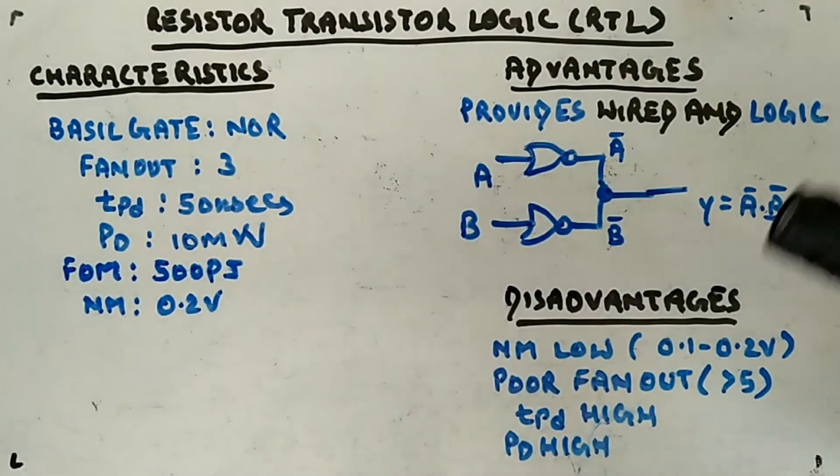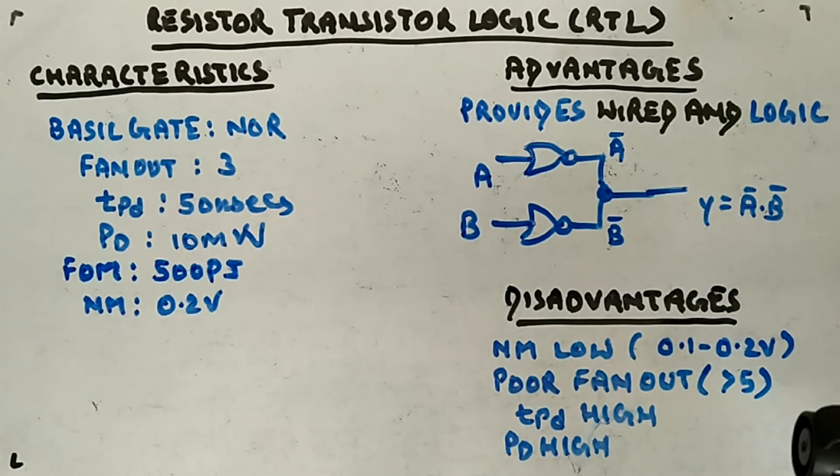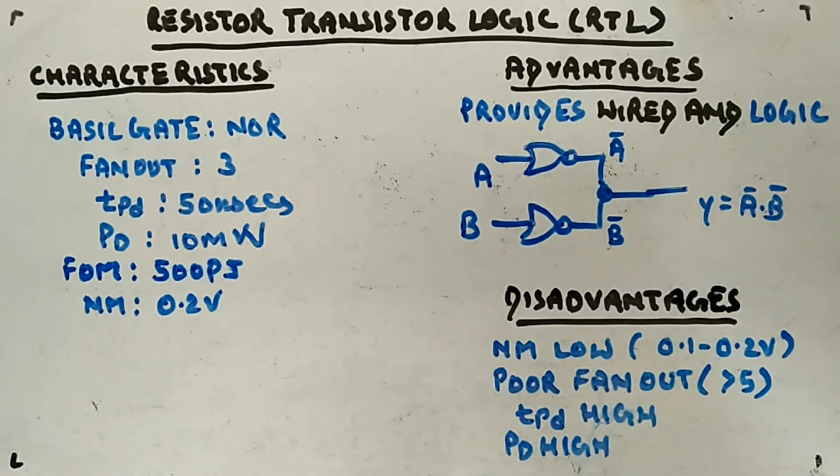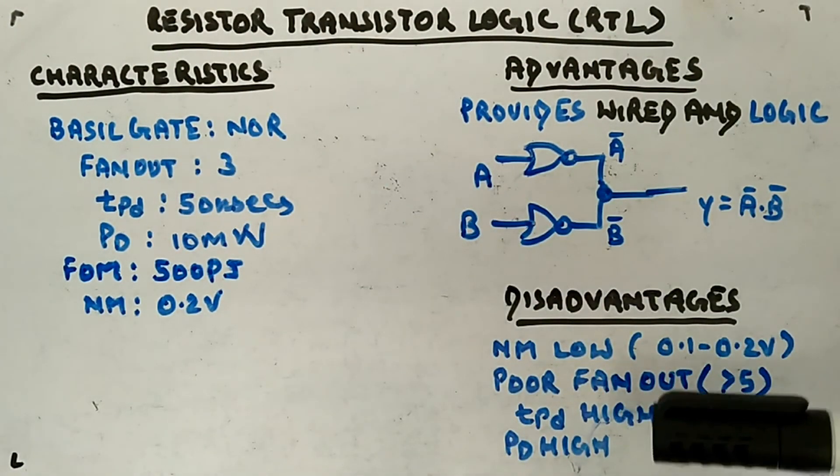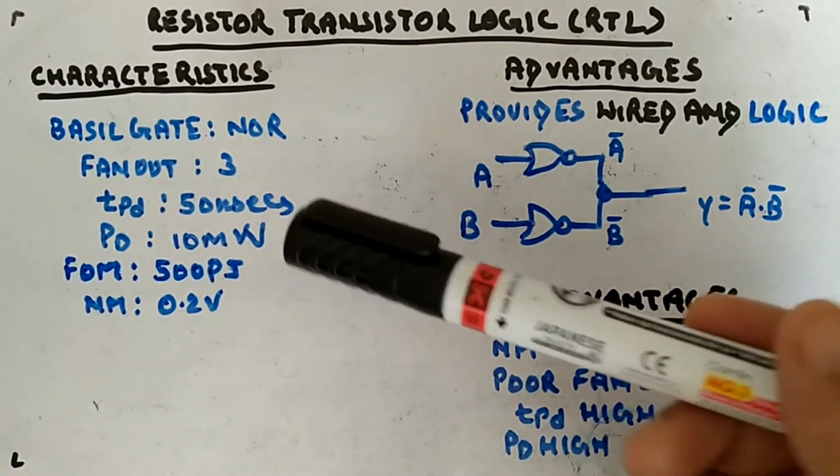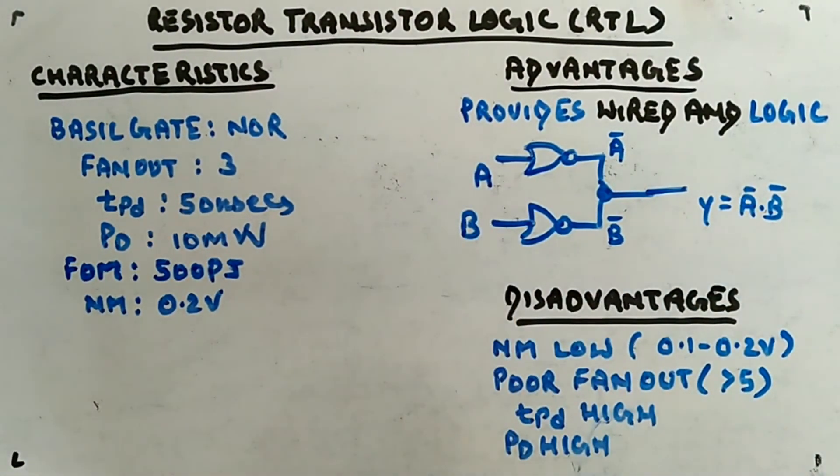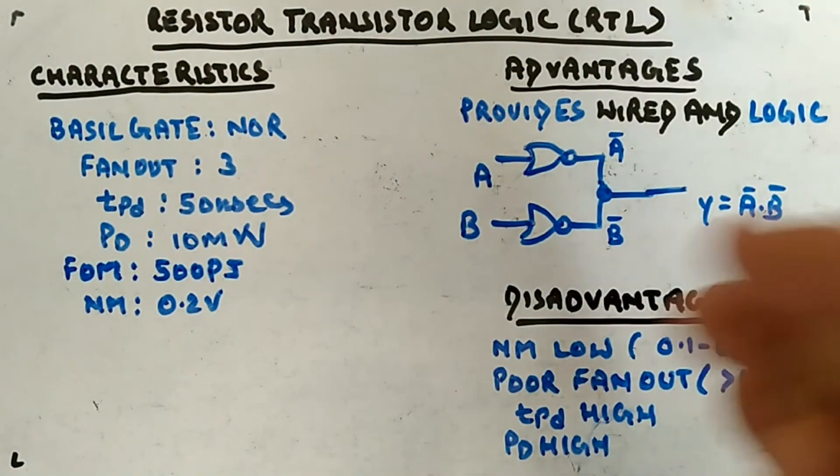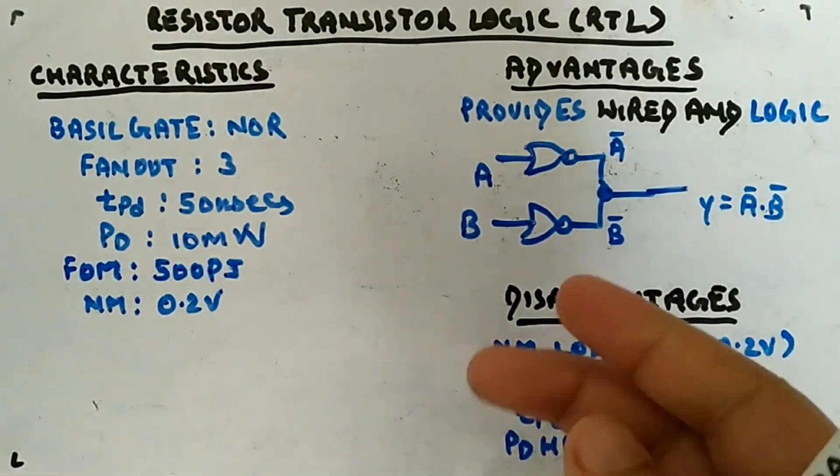Now the disadvantages: low noise margin, around 0.1 and 0.2 - you can have other logic families where you will have better noise margin. Poor fan-out - should be typically more than five, here it is three, so it's not good. Tpd is high, meaning propagation delay is high. Power dissipation is high. It was a starting logic family, that's why after this a lot of logic families came with improvements.